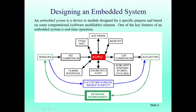Here you can see the CPU, or central processing unit, which is connected to many other devices via system buses. At the input, there are sensors and analog-to-digital conversion; at the output, there are actuators and digital-to-analog conversion. There are also many other devices connected to the CPU, like FPGA, ASIC, software interface, memory interface, human interface devices, diagnostic parts, auxiliary systems, and power cooling.